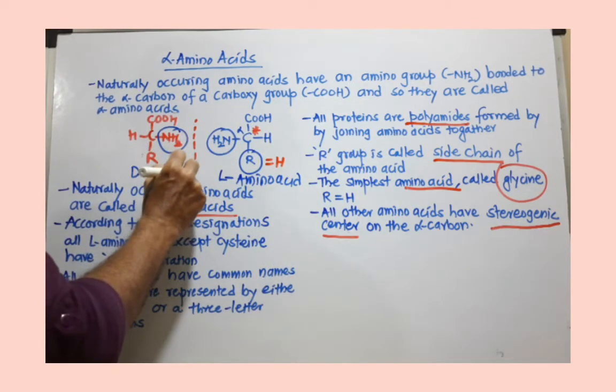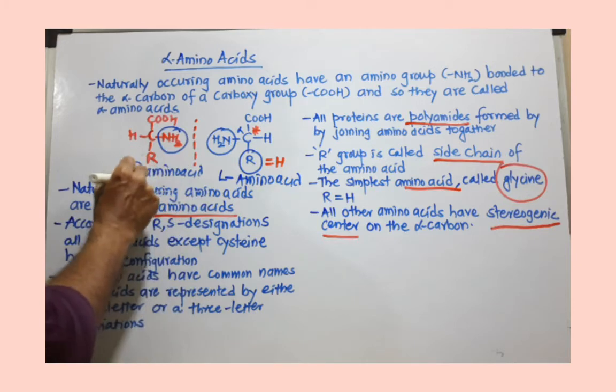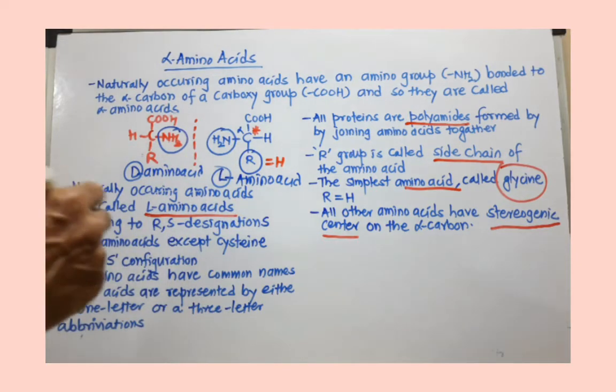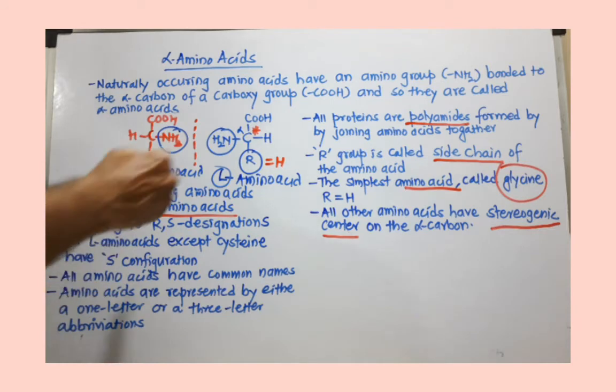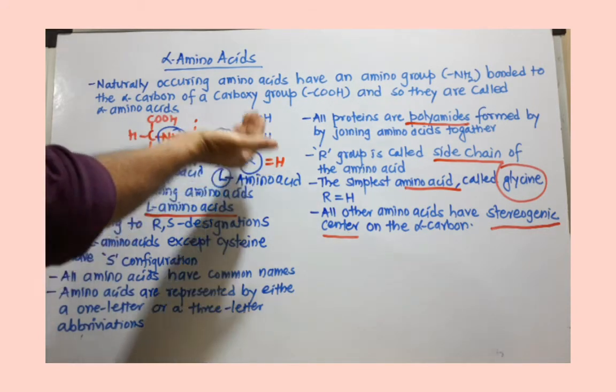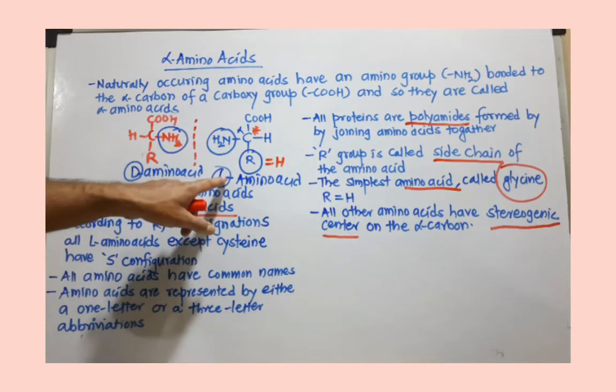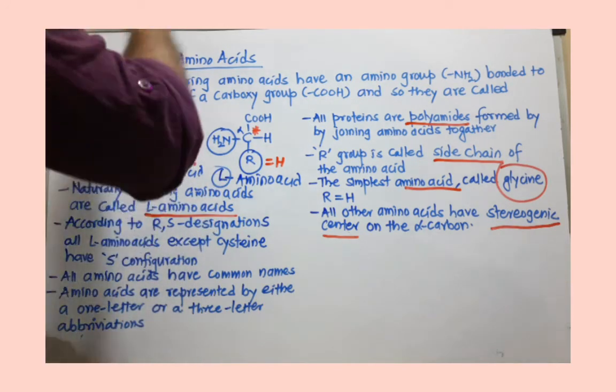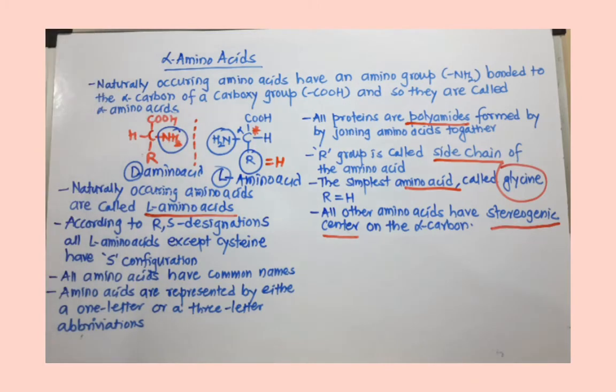Don't forget we use capital letters D and L for the configuration of the stereogenic center. When NH2 is toward the left-hand side, this is an L-amino acid, and when the NH2 group is toward the right-hand side, this is a D-amino acid. All naturally occurring amino acids are L-amino acids.